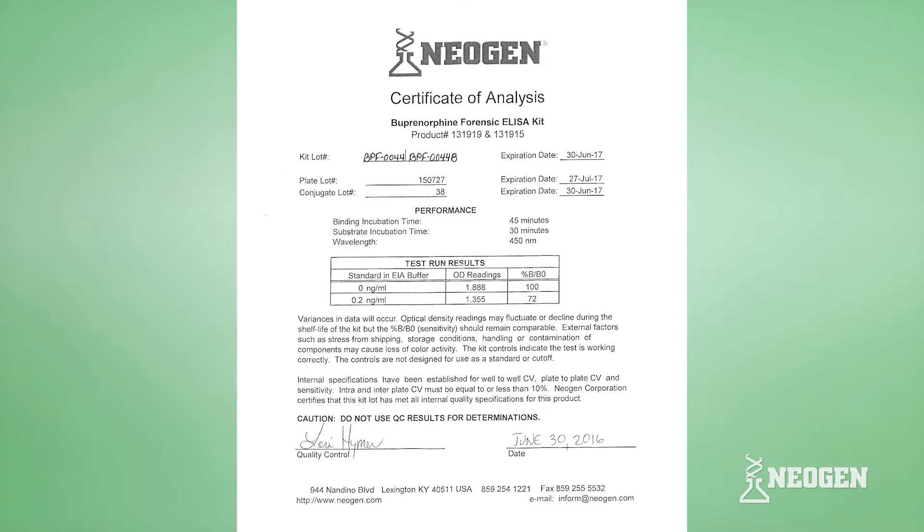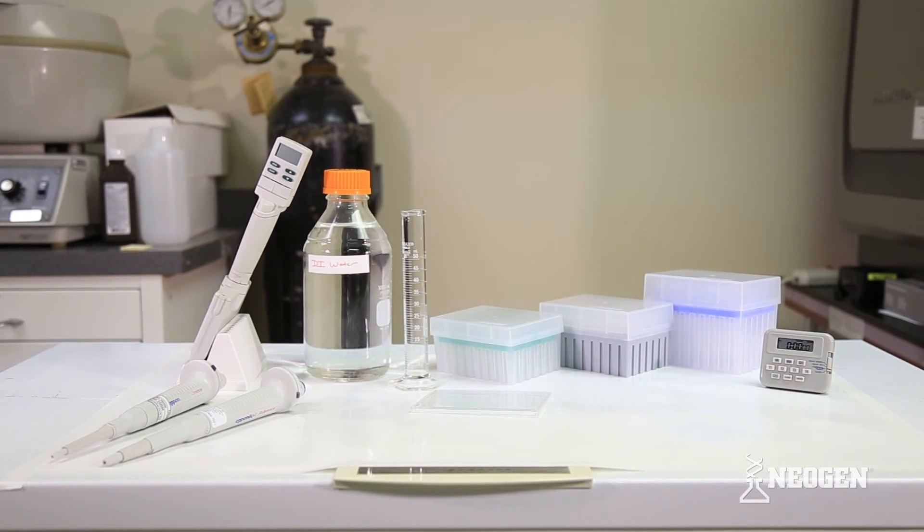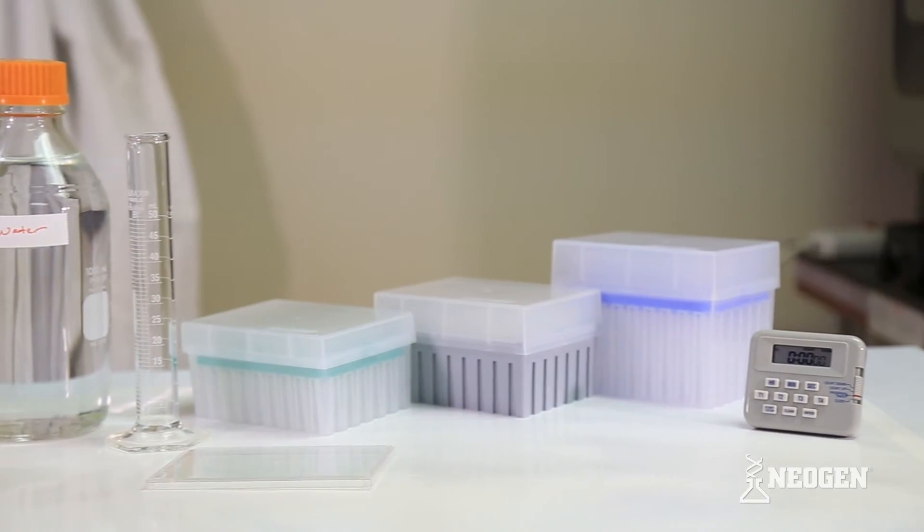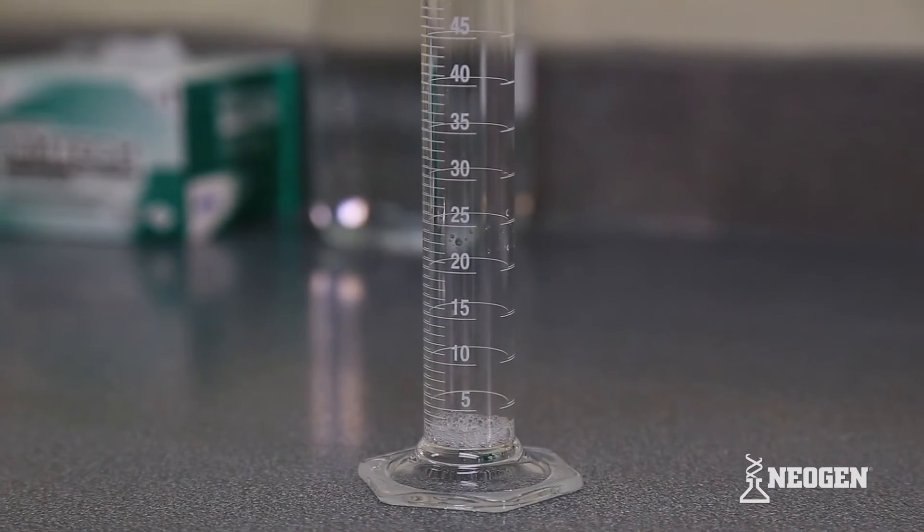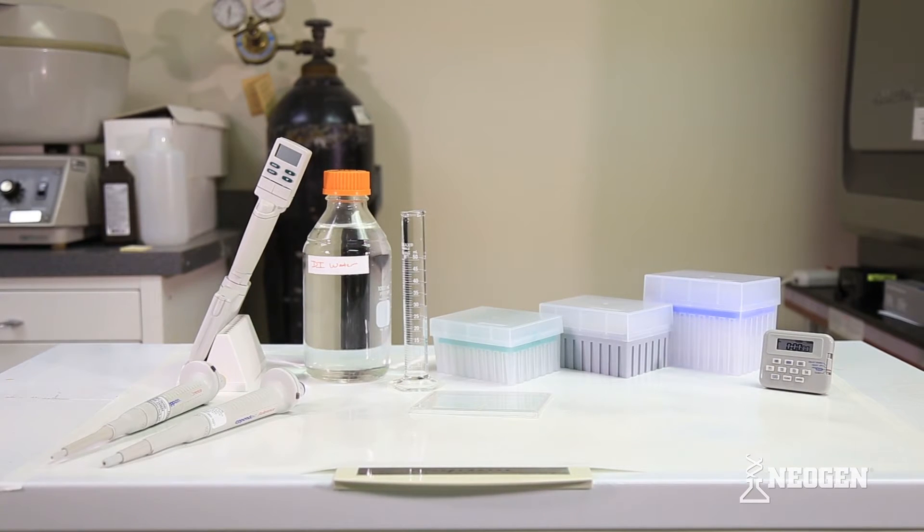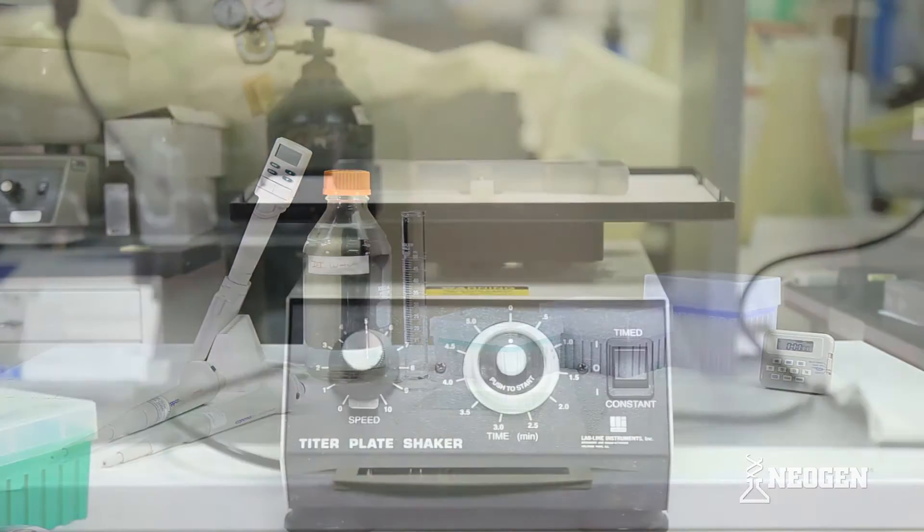Materials you will need but are not provided include deionized water, precision pipettes ranging from 10 microliters to 1,000 microliters, disposable tips for those pipettes, a graduated cylinder to mix the wash buffer, a plate cover, glassware, a microplate reader with a 450 nanometer filter, and, optionally, a microplate shaker.